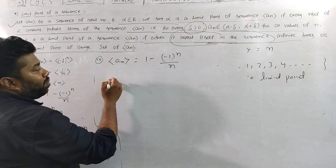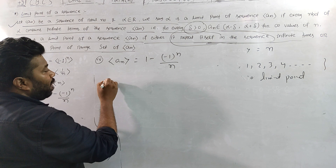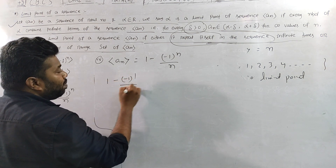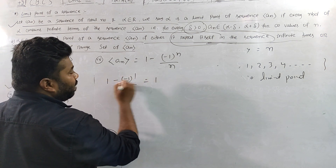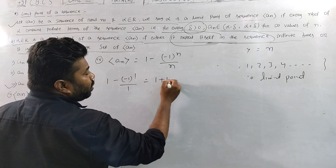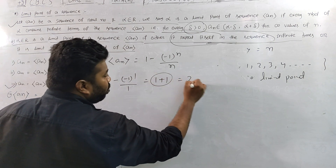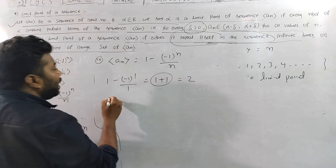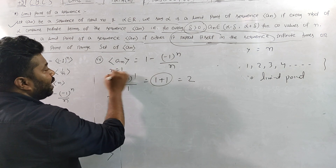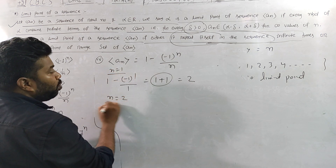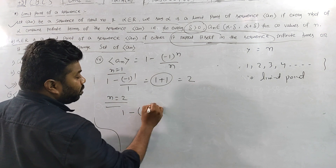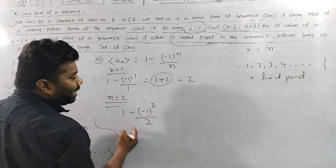We put n = 1: 1 minus ((-1)^1)/1 = 1 minus (-1) = 1 plus 1 = 2. Then put n = 2: 1 minus ((-1)^2)/2 = 1 minus (1/2).